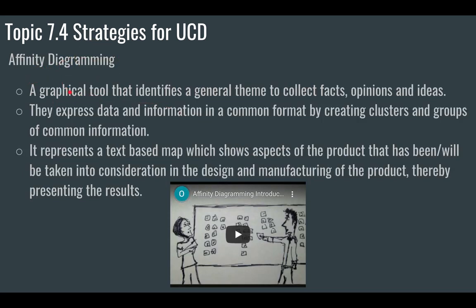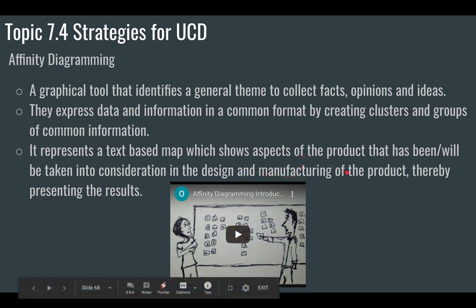The next strategy is Affinity Diagramming. This is a graphical tool that identifies a general theme from a collection of facts, opinions, or ideas. It expresses data in a common format by creating clusters and groups of common information. It represents a text-based map showing aspects of the product that have been and will be taken into consideration in design and manufacturing. Essentially, you're looking at a whole group of facts or opinions and trying to group them into categories.